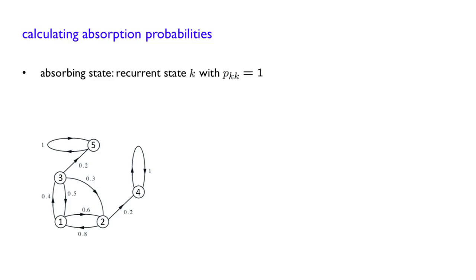For example, consider this transition probability graph. States 4 and 5 are both absorbing states. Indeed, when you get to 4, you stay in 4. Or when you get to 5, you stay in 5. States 1, 2, and 3 are transient states.